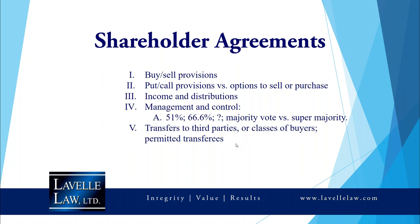Shareholder agreements can include put and call provisions or options to sell or purchase. If I want a put right on my shares, that means as a minority shareholder I can put my shares to the corporation and the corporation must buy me out — not common, but it exists. A call provision is generally exercised by the majority shareholder to buy out a minority shareholder who isn't pulling their weight, using a formula set forth in the agreement.